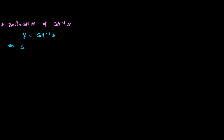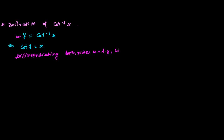We rewrite cot inverse to the other side, so it becomes cot(y) = x. Now since the angle of cot is y, we have to differentiate both sides with respect to y to get the derivative of this function y. So differentiating both sides with respect to y, we get the derivative of cot(y).